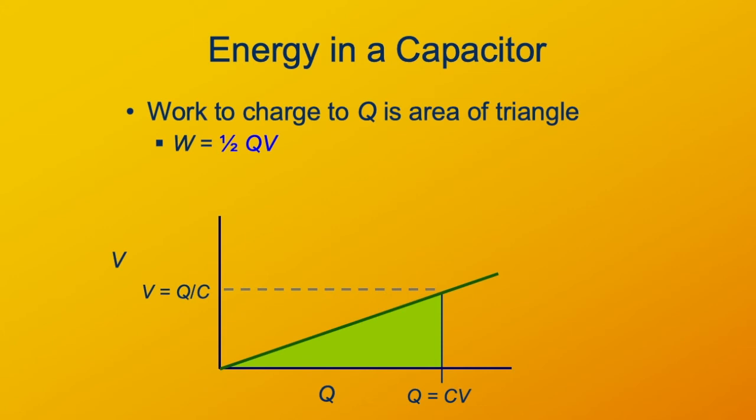We don't always know what the charge Q is. We might know just what the capacitance is and what the voltage is. So if we happen to know the capacitance, then we can solve this for capacitance and voltage and get one half CV squared.